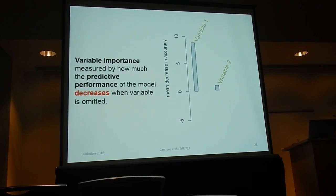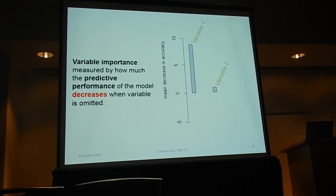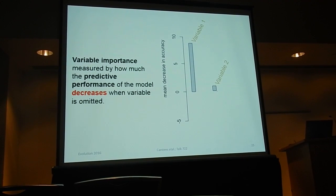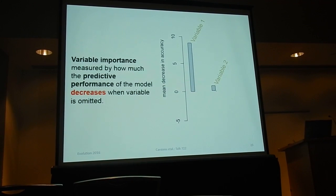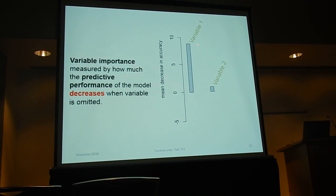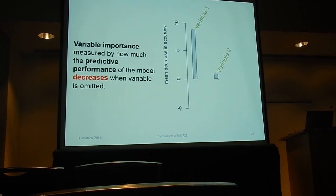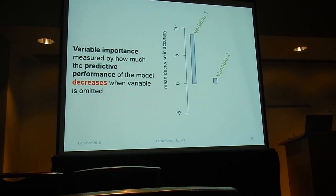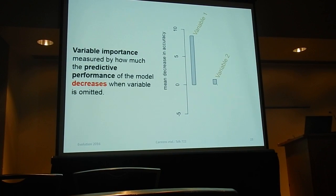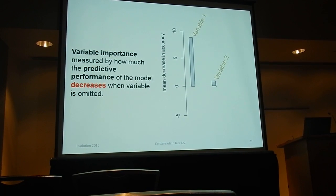To interpret the results, we look at variable importance by measuring predictive performance. If you take a variable out and the accuracy of the model decreases a great deal, that variable is important. If taking a variable out doesn't change accuracy much, it's not an important variable. For the results slides, I'll show histograms that rank variables by this measure.